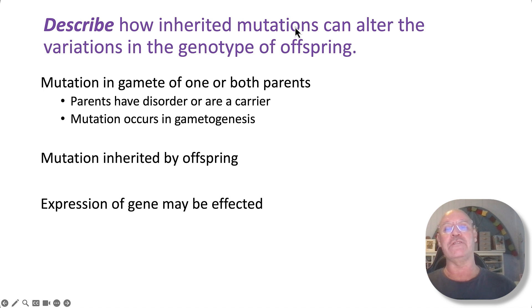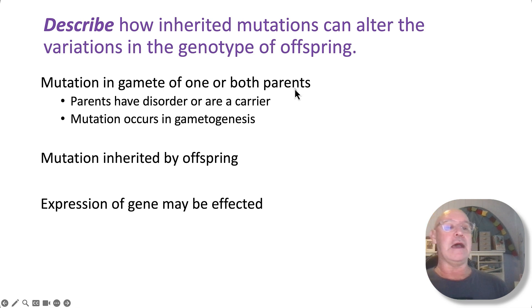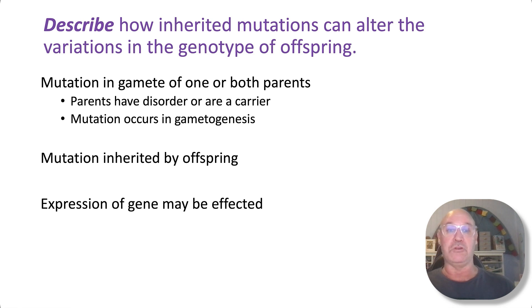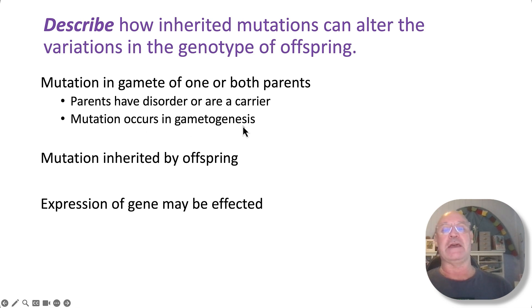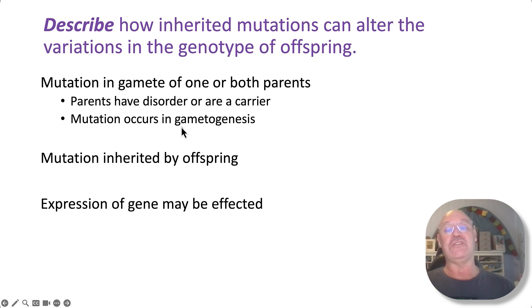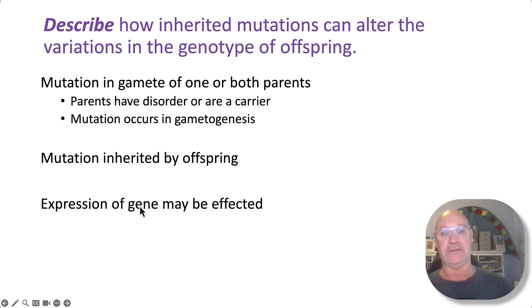So how can inherited mutations alter the genotype of offspring? If there are mutations in the gametes of one or both parents — this could occur if the parents have the disorder or are carriers (a carrier has a copy of the mutated gene but it's not expressed) — or if a mutation occurs during gametogenesis, then that mutation is inherited by the offspring and the expression of the gene in the genome may be affected.